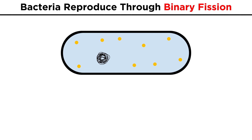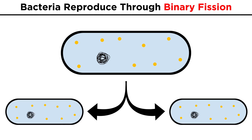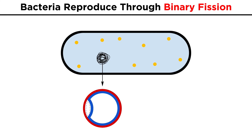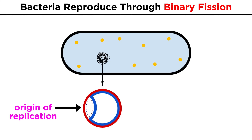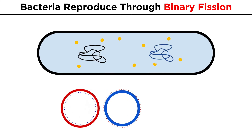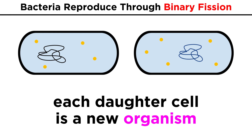Bacteria reproduce through binary fission, which is sort of like mitosis in eukaryotic cells, in that the result is two identical daughter cells with all the genetic information. However, the process itself is much simpler. Replication begins at a particular point on the chromosome called the origin of replication. While this takes place, the cell elongates. Once there are two copies of the chromosome, the cell pinches closed in the middle, resulting in two new daughter cells.